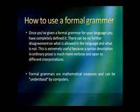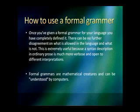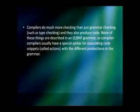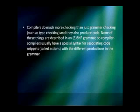There are actually many programs that can be given BNF grammars as input and automatically produce parser code for the given grammar. In fact, this is the most common way to produce a compiler — by using a so-called compiler-compiler that takes a grammar as input and produces parser code in some programming language. Of course, compilers do much more checking than just grammar, such as type checking, and they also produce code. None of these things are described in a BNF grammar. So compiler-compilers usually have a special syntax for associating code snippets called actions with the different productions in the grammar.